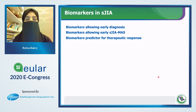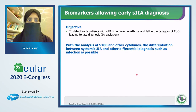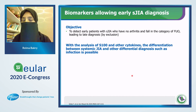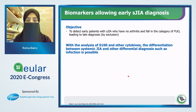Now I will talk about biomarkers in systemic JIA. We have biomarkers that allow early diagnosis of systemic JIA, markers allowing early macrophage activation syndrome diagnosis, and biomarkers that predict the response to specific therapies. The objective was to detect early patients with systemic JIA who have no arthritis and fall in the category of fever of unknown origin — those patients usually have a late diagnosis leading to later starting of therapy and probably a worse outcome. With the analysis of S100 protein and other cytokines, differentiation between systemic JIA and other diagnoses such as infection is difficult but possible. That was published in 2019.